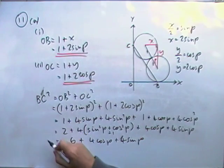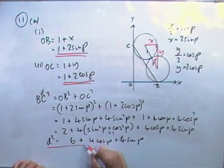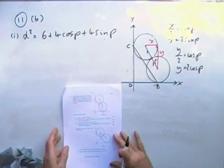Sin squared and cos squared equals 1. So that's just going to be 2 plus 4, which is 6 plus 4 cos P plus 4 sin P. It's equal to, and it says, work out D, which is equal to that, which is D squared.